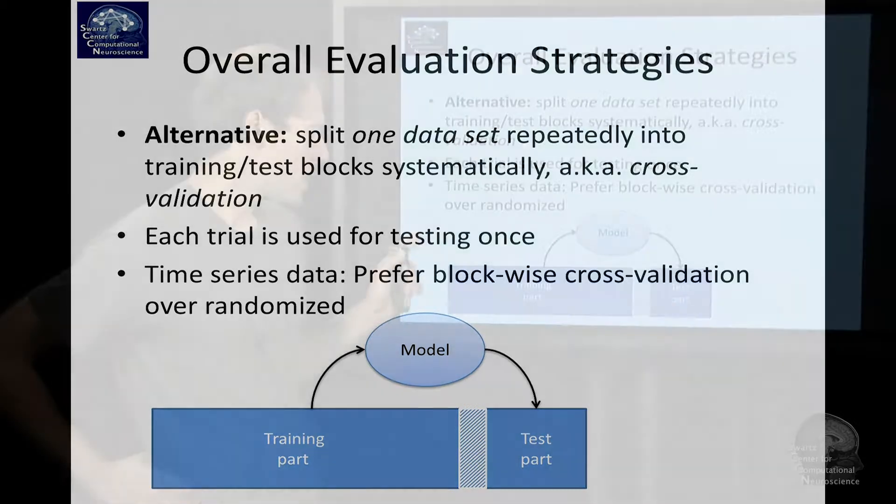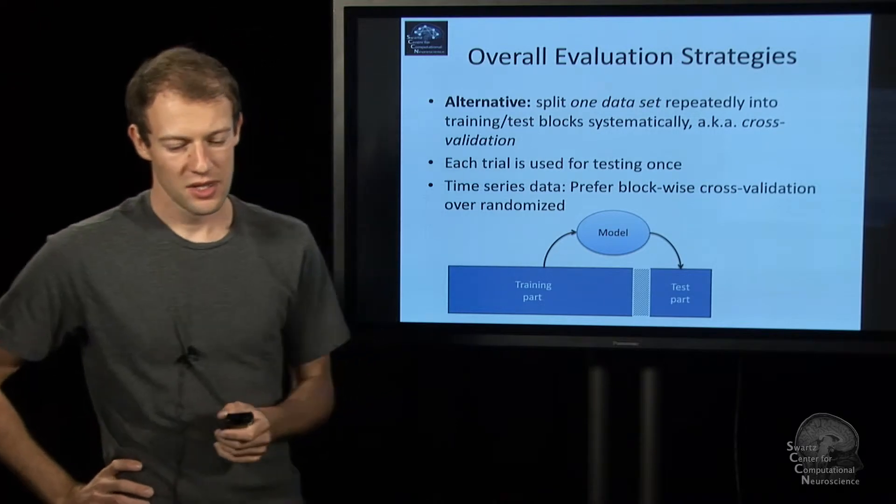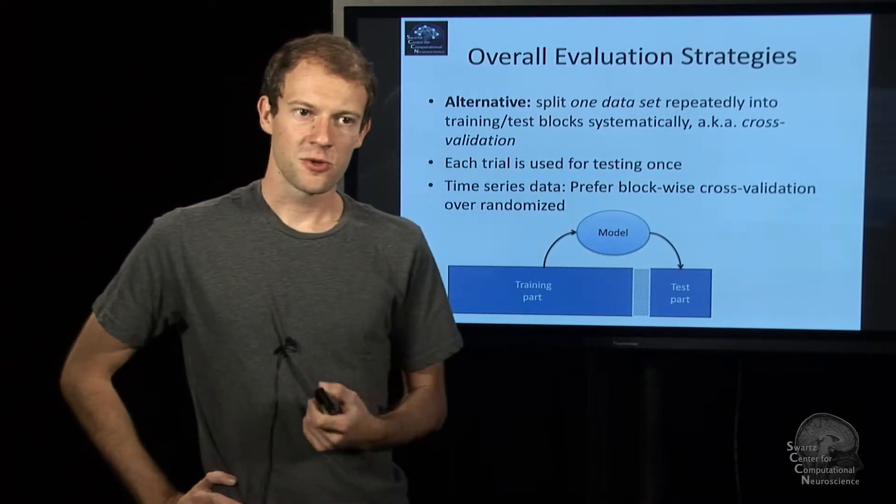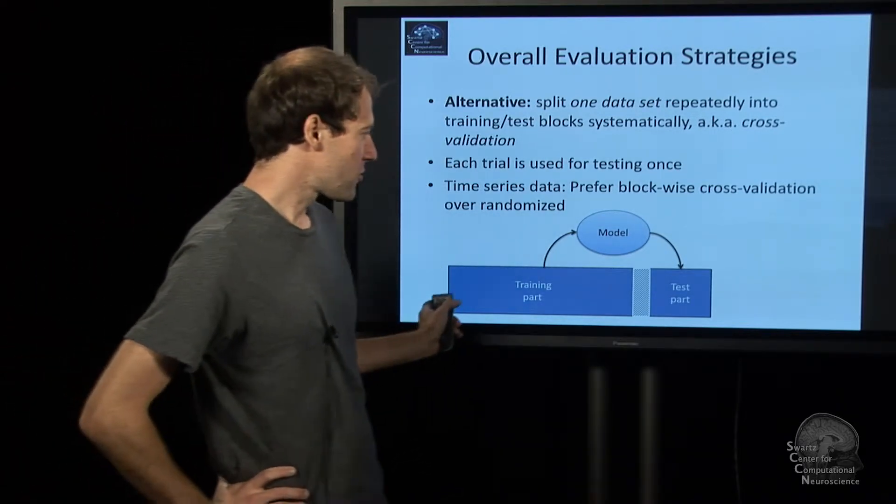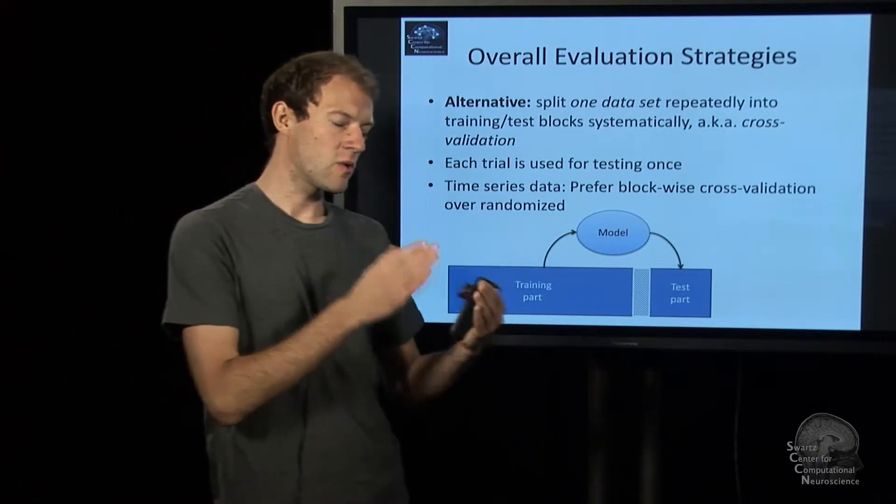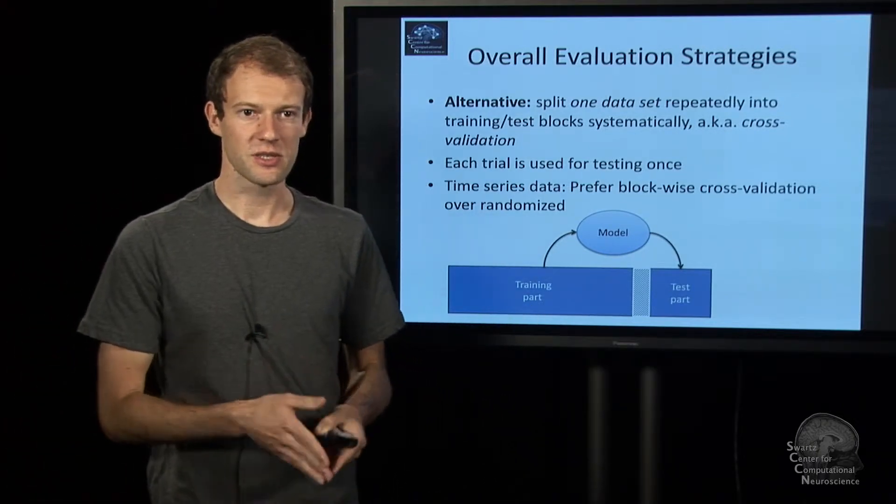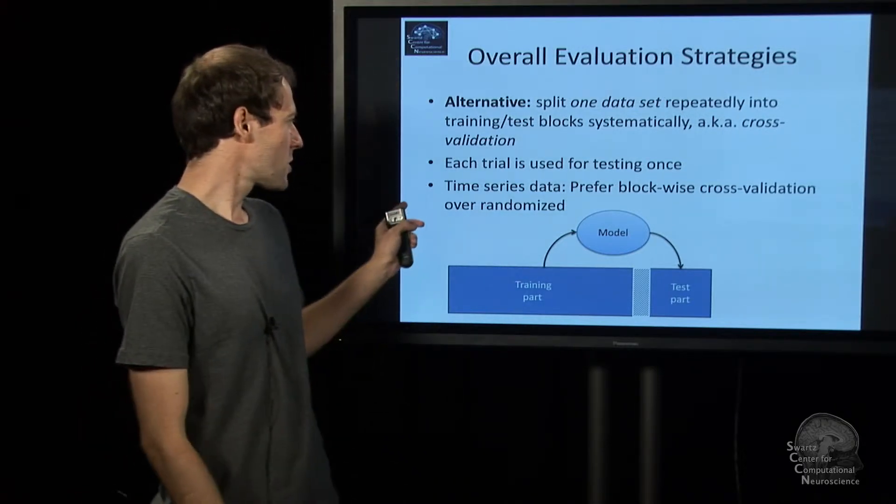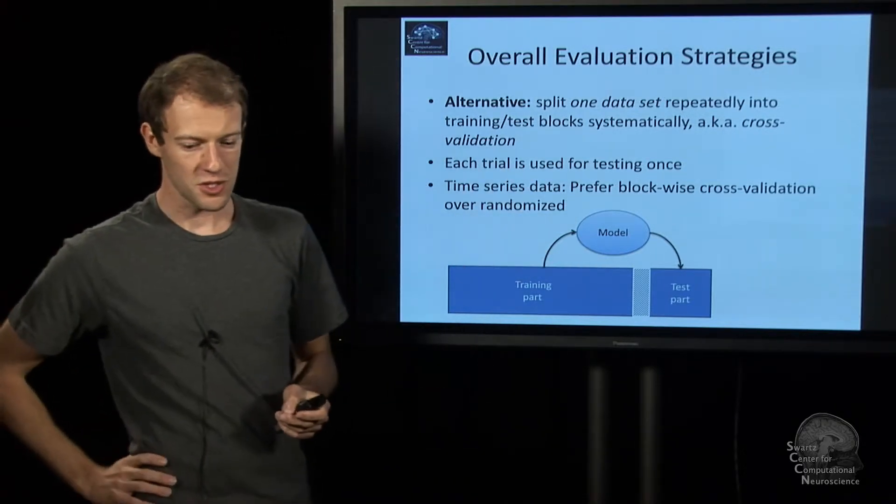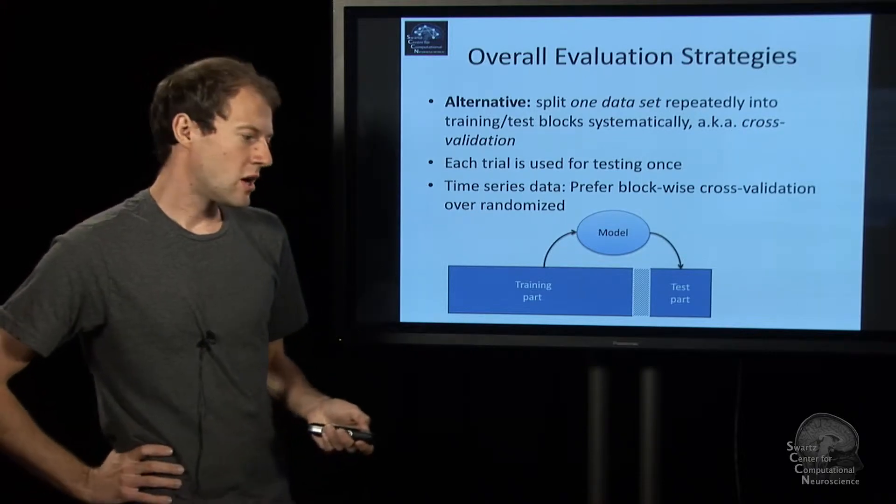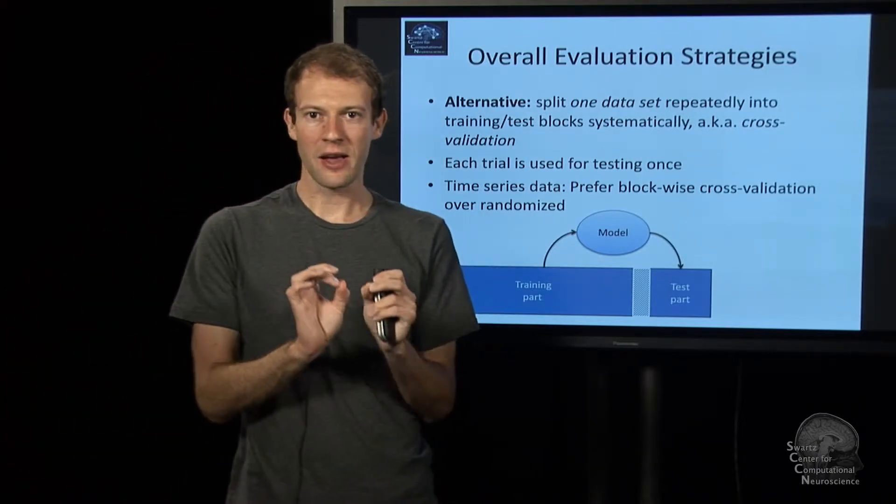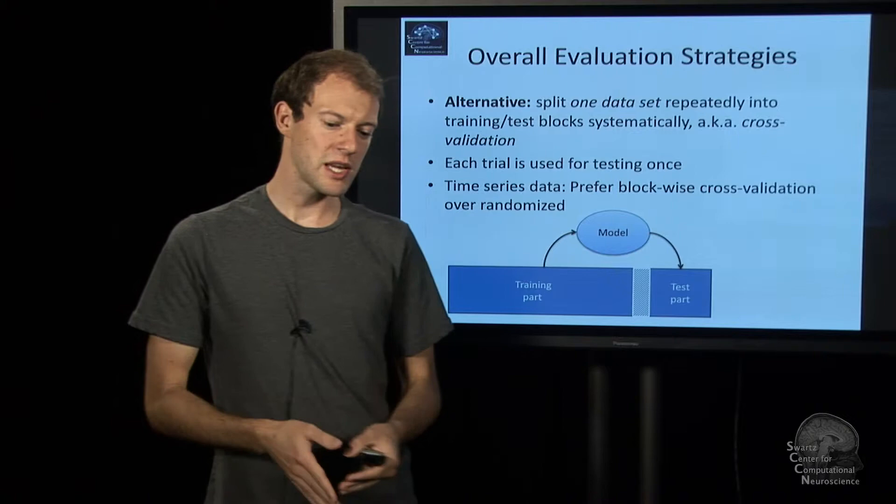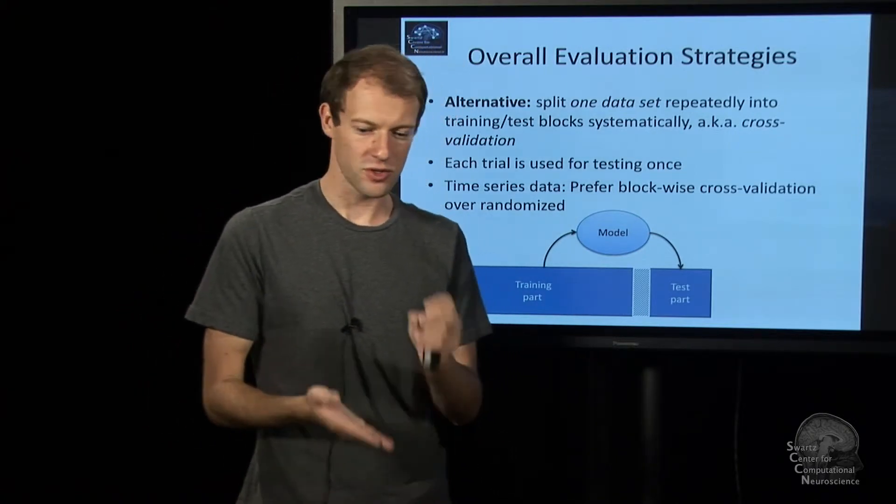And there is one little caveat. In the machine learning literature, you will frequently find that people perform randomized cross-validation where they are taking a random subset of trials, which is a test set, say 20%. That's a problem when you're working with time series data. Because in time series data, like in BCI, we know that nearby trials are very highly correlated. Say a person is sneezing, he's probably still recovering from the sneeze on the next trial.